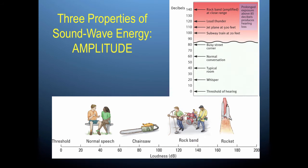The next property is amplitude. Amplitude corresponds to the loudness of a sound and is measured in decibels. Our basic threshold for hearing would be zero decibels. 20 decibels would be a whisper. A typical room chatting is about 40 decibels. A busy street is about 85 to 90 decibels. What is particularly key about this graph is the area in red — prolonged exposure above 85 decibels produces hearing loss.